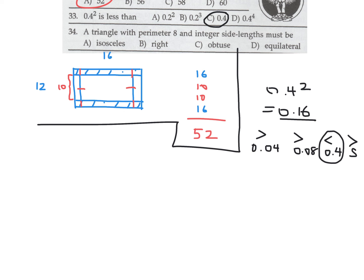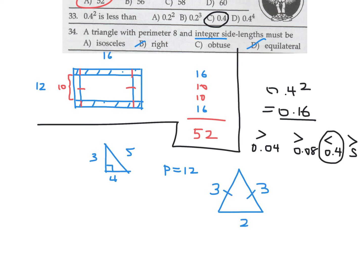A triangle with perimeter 8 and integer side lengths must be what type? It can't be equilateral since 8 isn't divisible by 3. Can it be right? 3-4-5 has perimeter 12, too big. Isosceles: 3-3-2 works and has perimeter 8. So A — isosceles — is the answer to number 34.